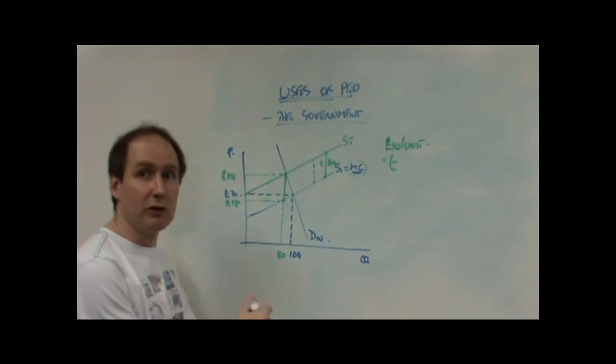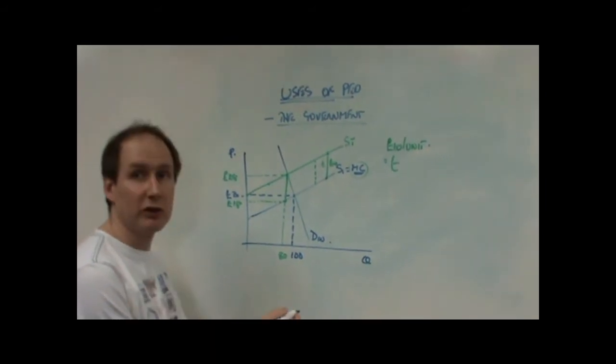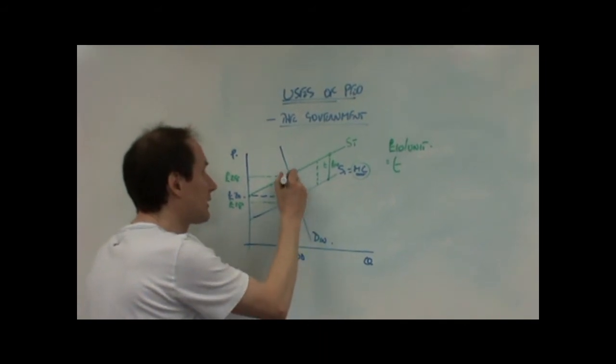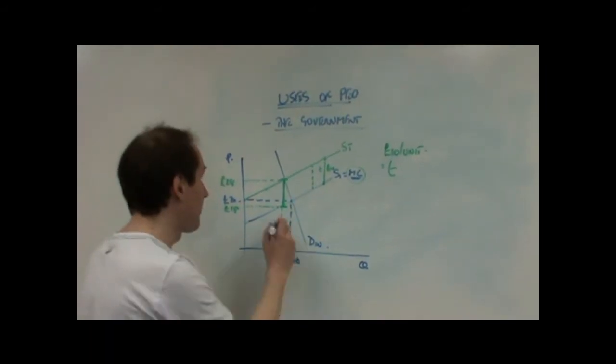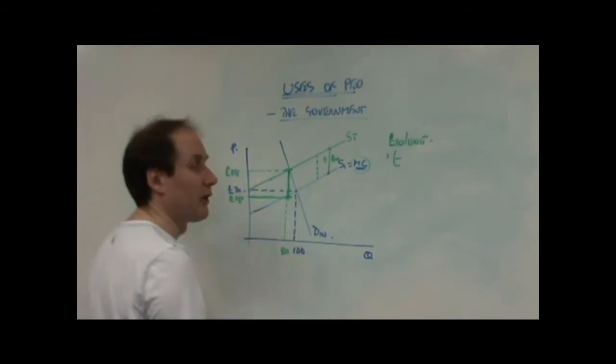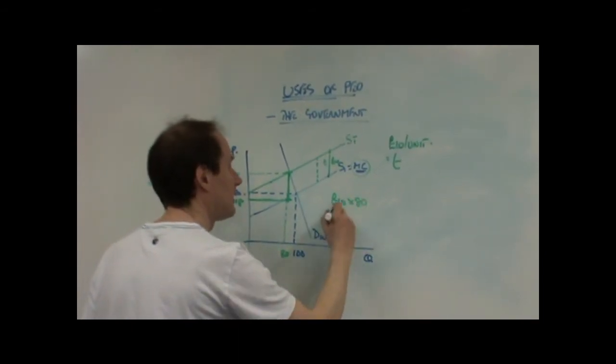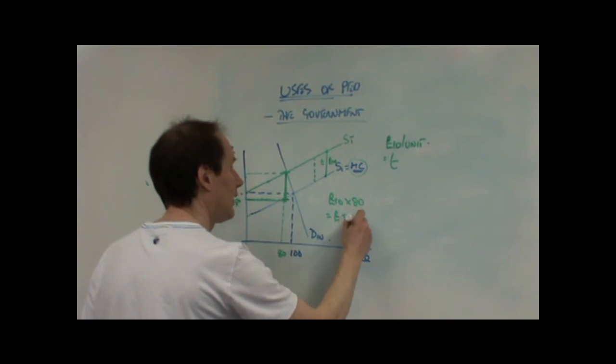And this allows us to show a number of things now. Firstly, we can show the total tax revenues of the government. The government is taxing at 10 pounds per unit. It does it on 80 units. So, tax is 10 pounds per unit times 80 units, 800 pounds.